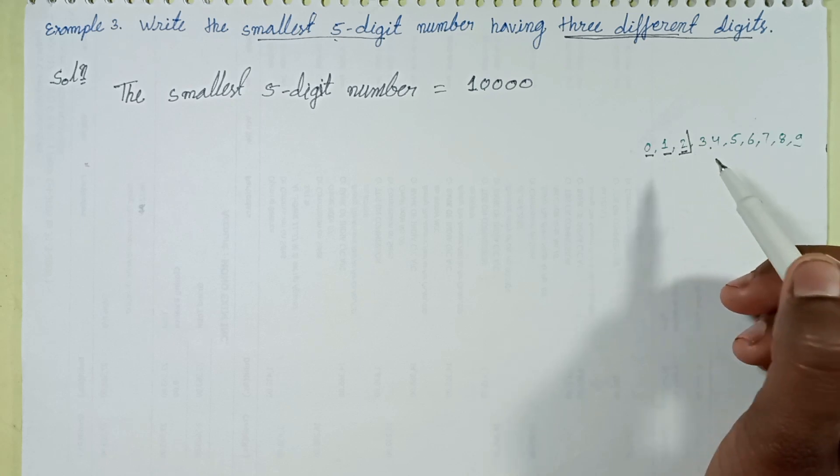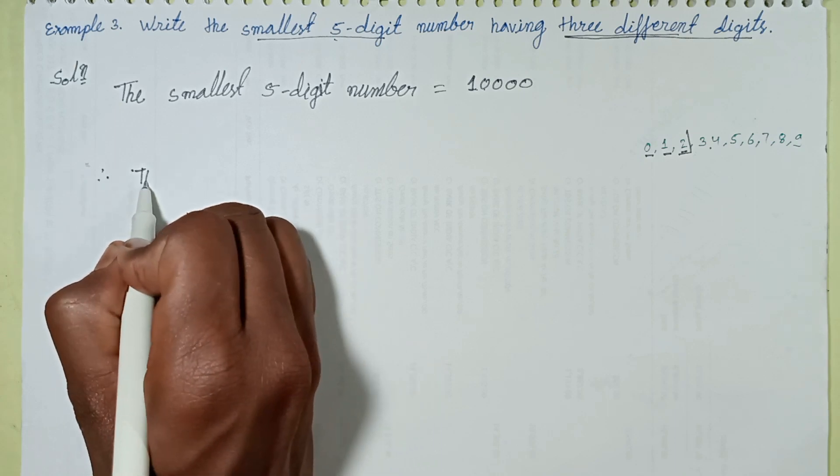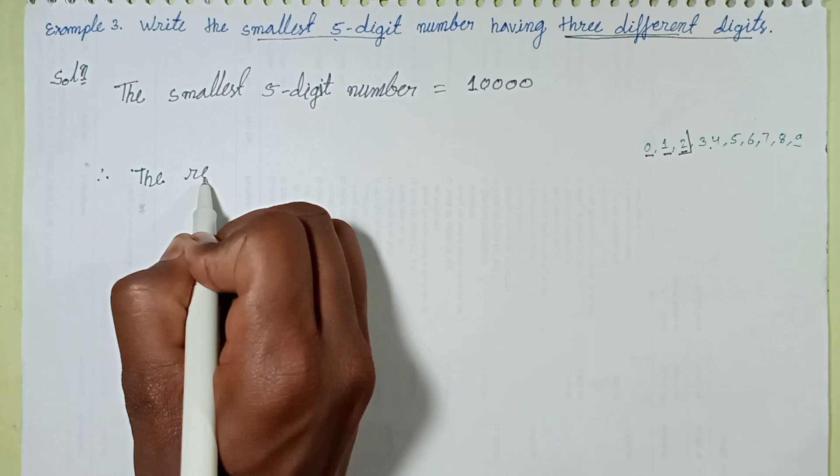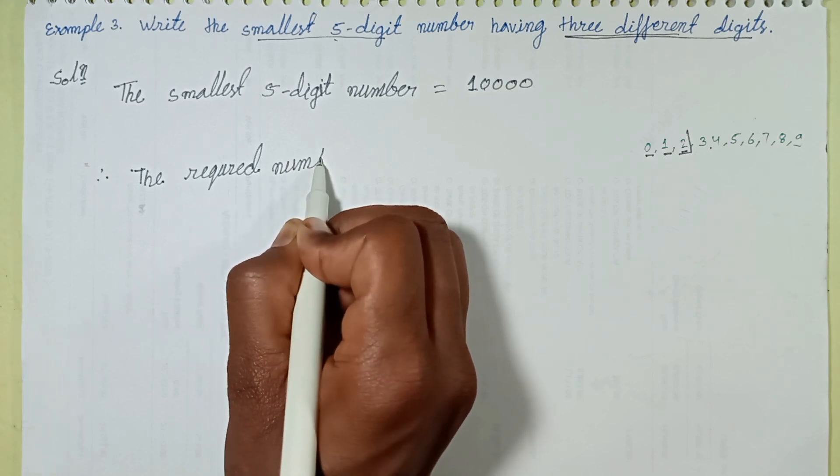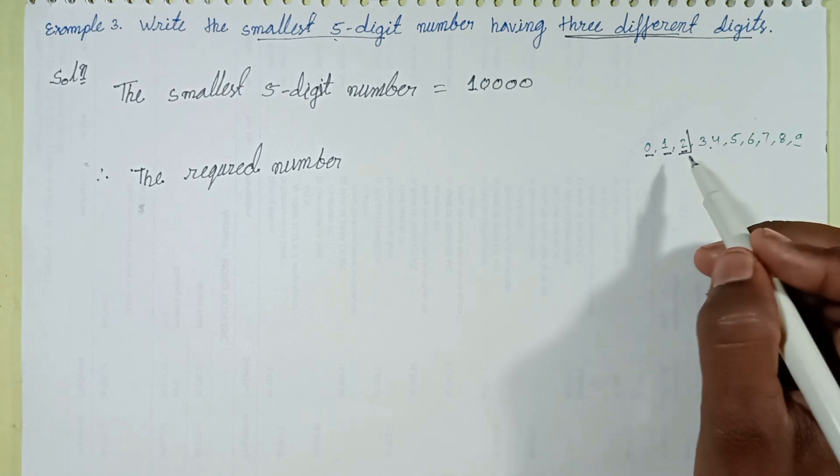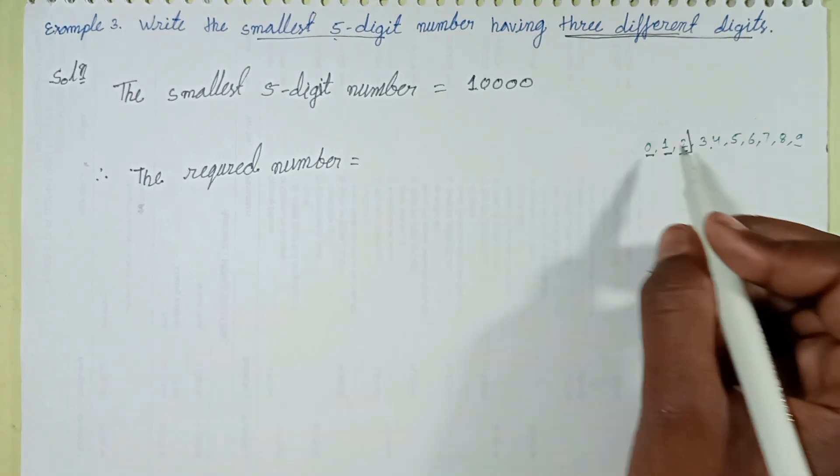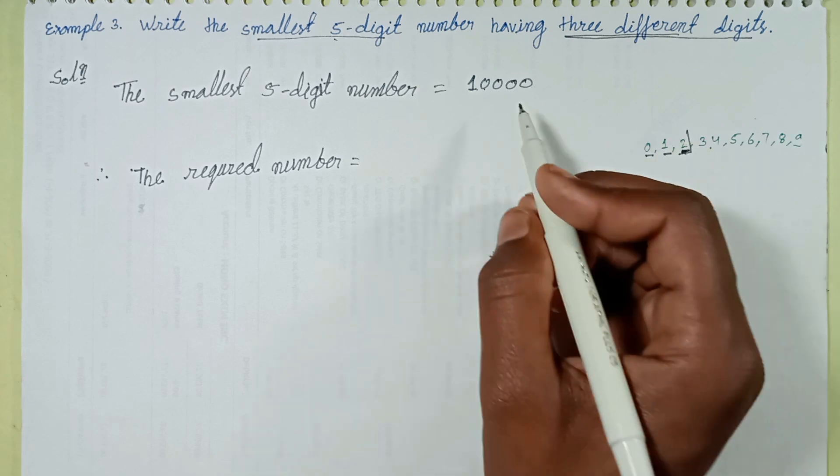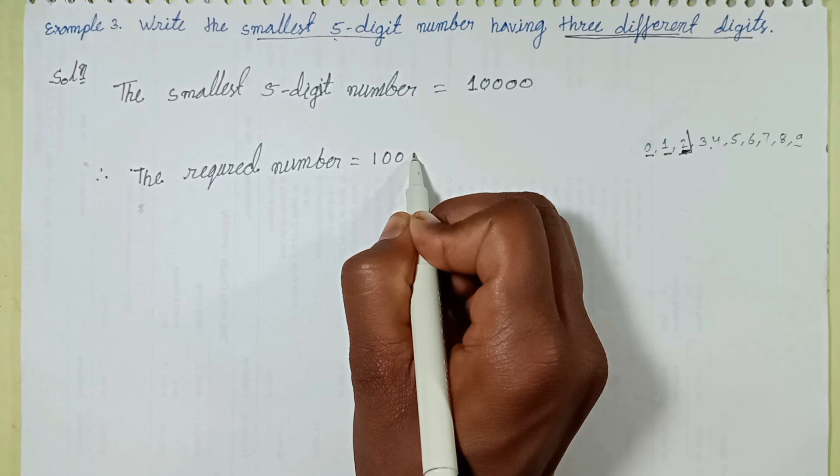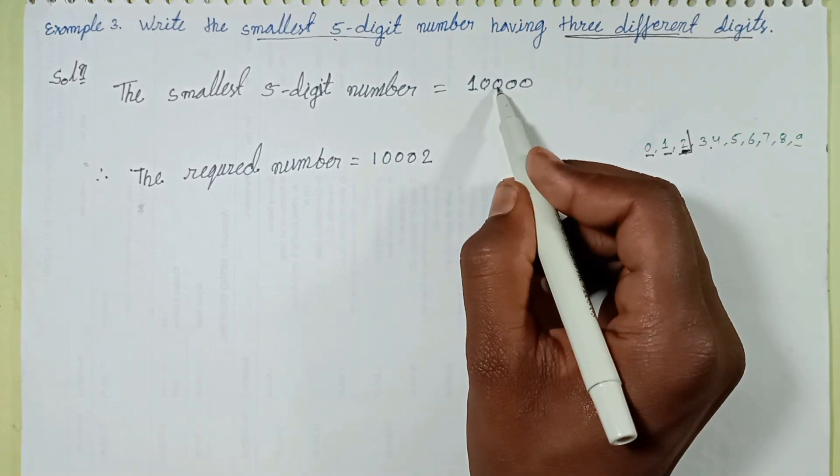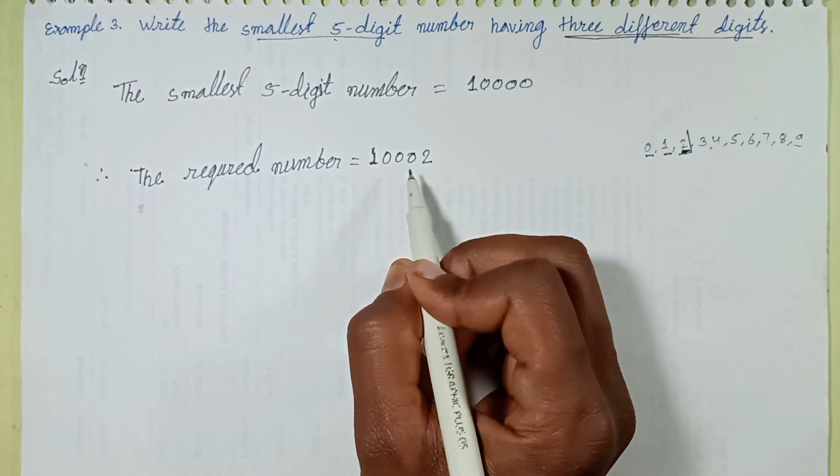To find the greatest value with 3 different digits, the required number is 10002. This number has five digits total: 1, 0, 0, 0, 2. This is the required number with the greatest value.